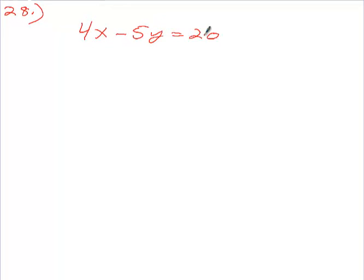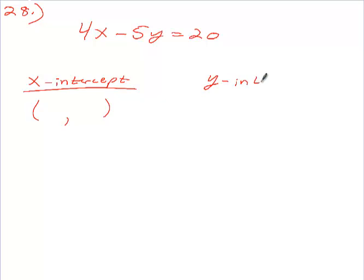Moving on — what's number 28 say? Same thing. X-intercept. Y-intercept. I don't remember if this book stresses that X-intercepts and Y-intercepts are points. I want you to recognize that they're points — they're values somewhere on the graph, so you need both coordinates. If you just put X-intercept of 3, you're going to lose half your points. It's not 3, it's 3 comma 0. So — X-intercept: which coordinate is 0? The Y. Y-intercept: which coordinate is 0? X.